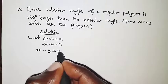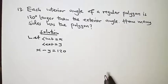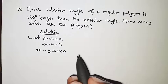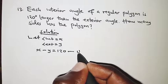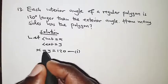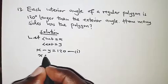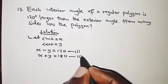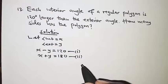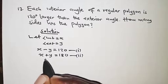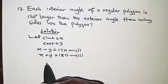So we take interior angle x minus exterior angle y, which gives us 120 degrees — that's our first equation. The second equation comes from the fact that the sum of interior and exterior angles is 180 degrees: x plus y equals 180. We now have a set of simultaneous equations to solve.